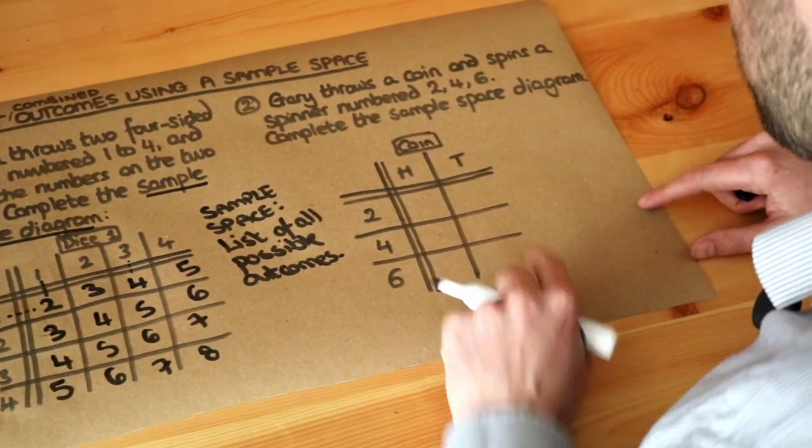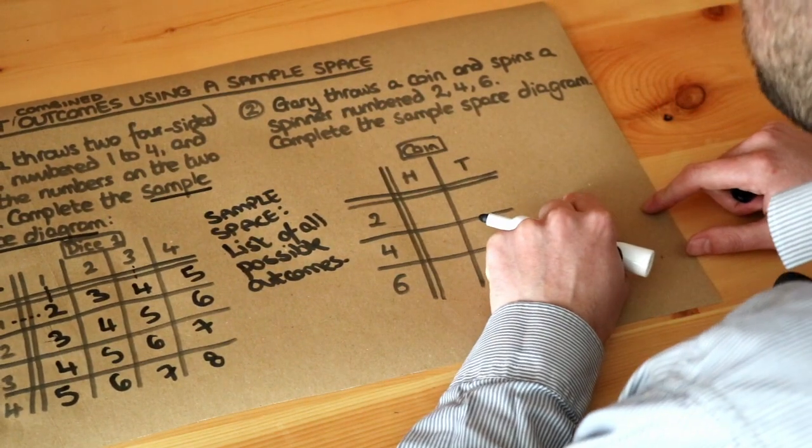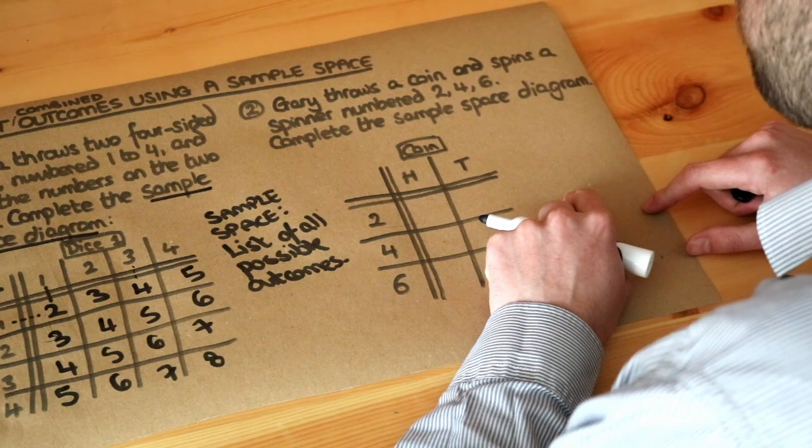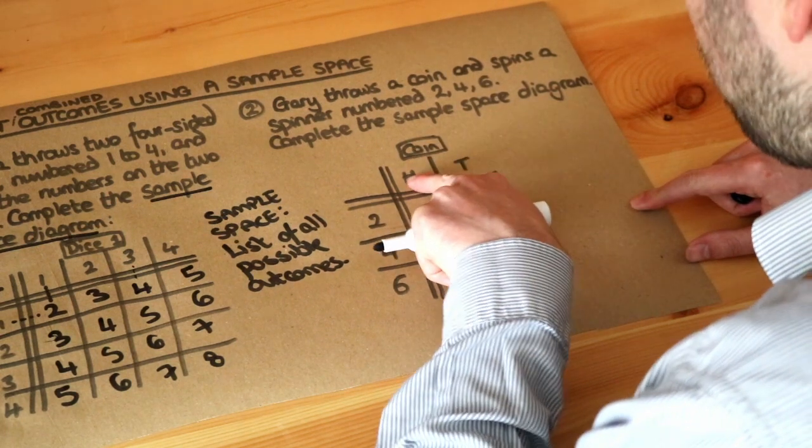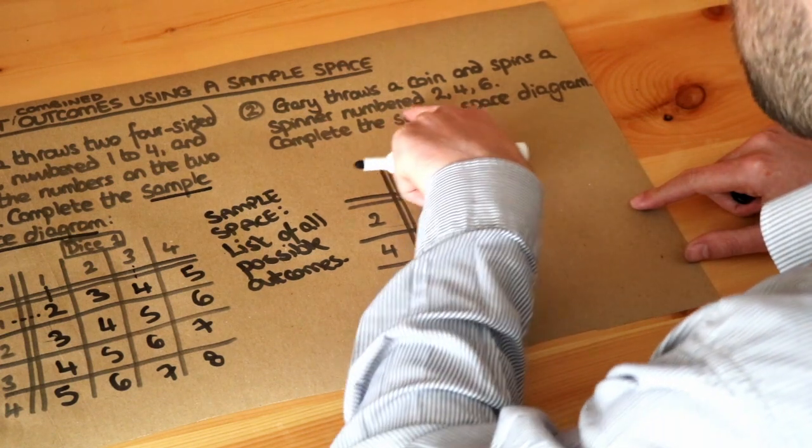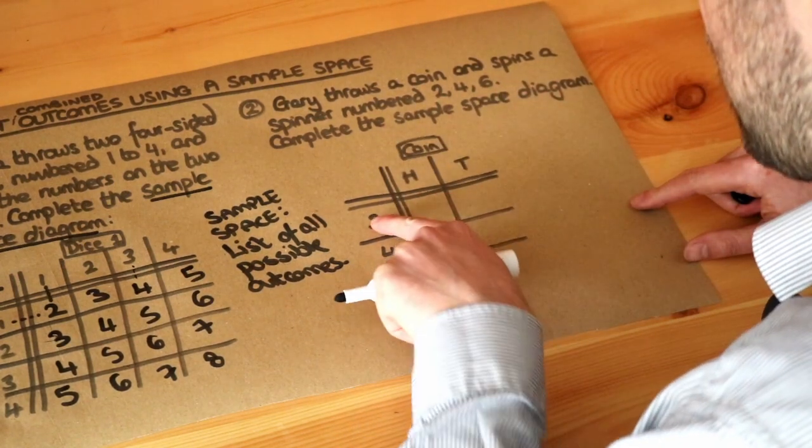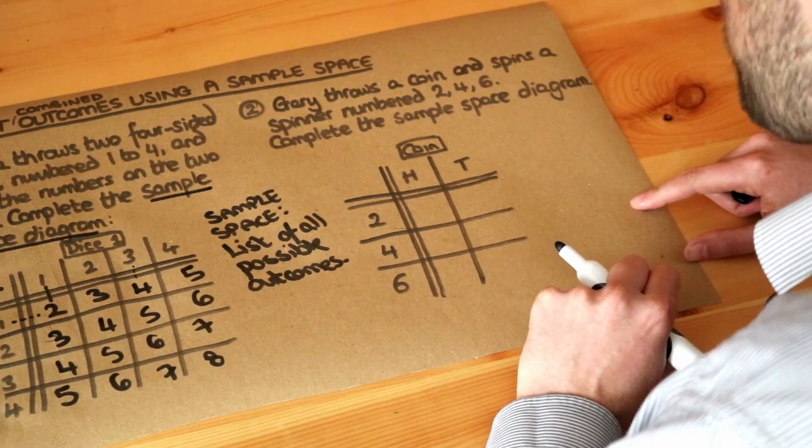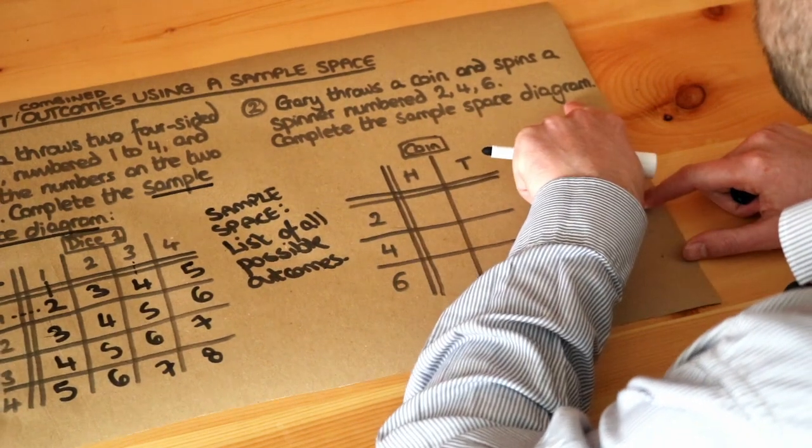What about the second one? Gary throws a coin and spins a spinner numbered two, four, and six. So we can see with the coin we've got the possible outcomes heads and tails, and then for the spinner we could get a two, a four, or a six. We want to complete the sample space diagram to show the combined outcomes.